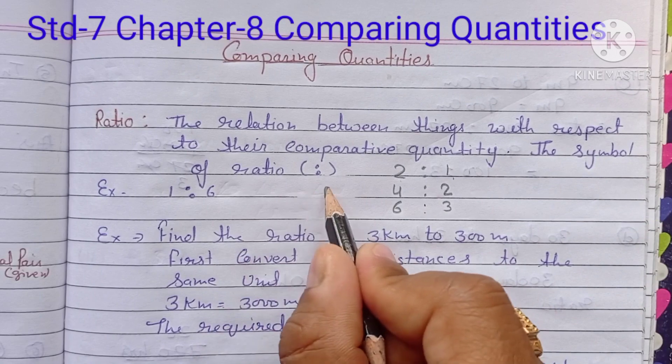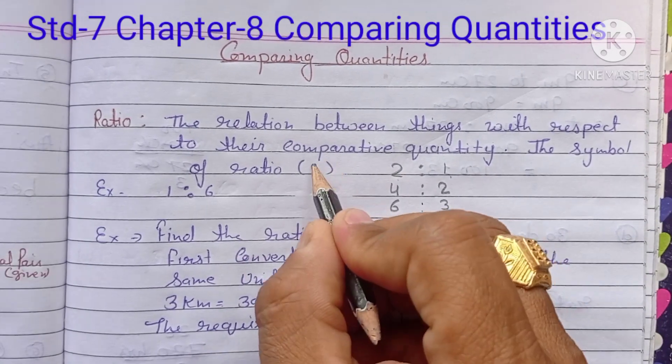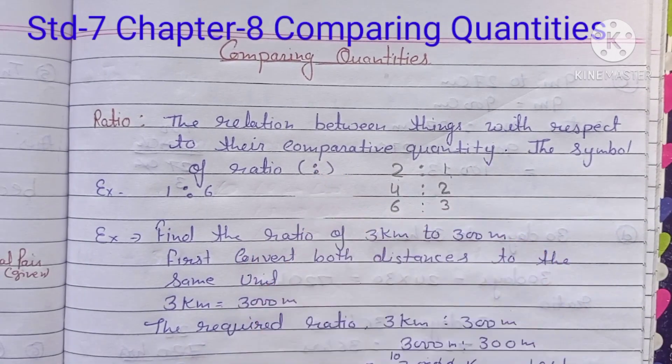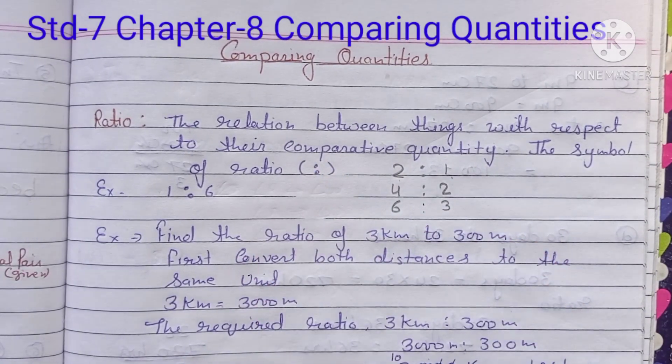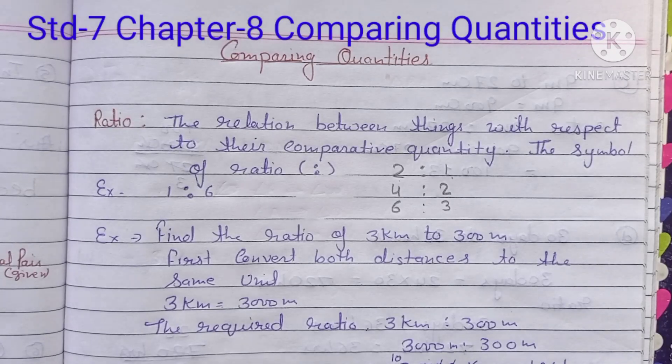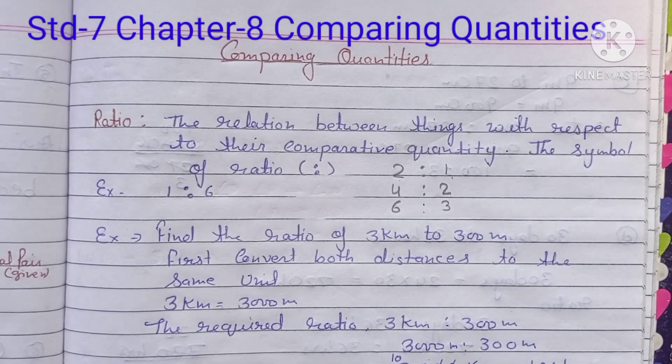The symbol of ratio is two dots (colon). We use two dots to show the ratio.